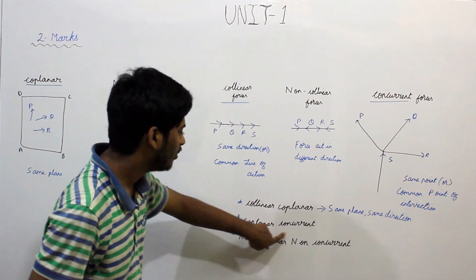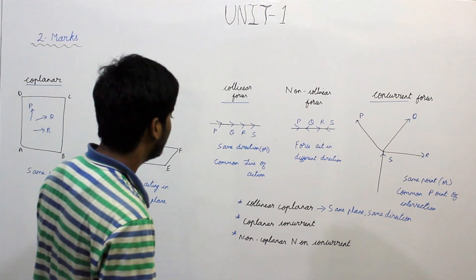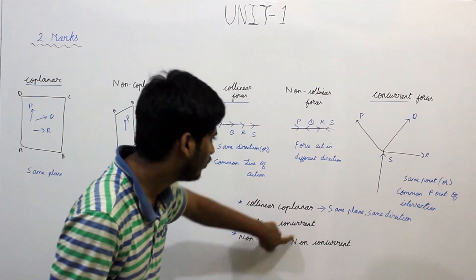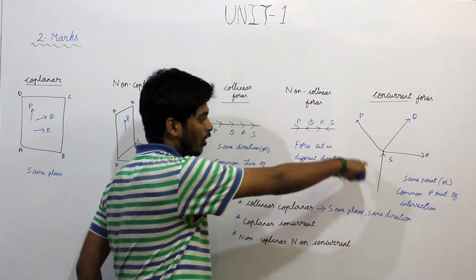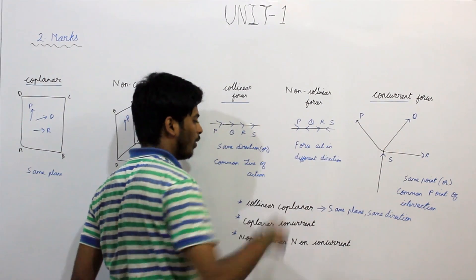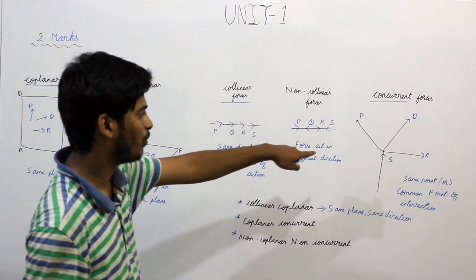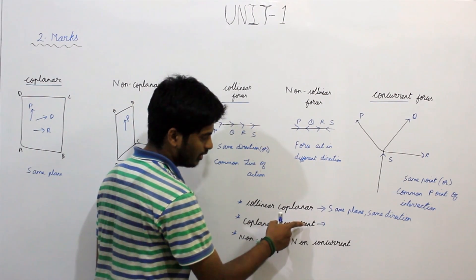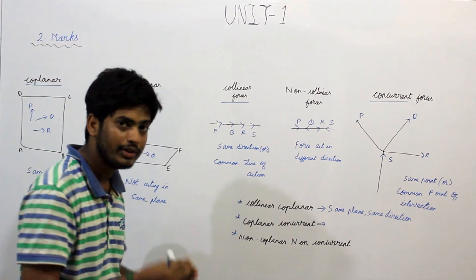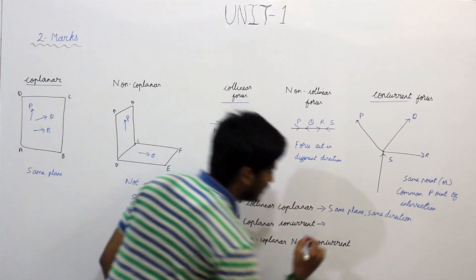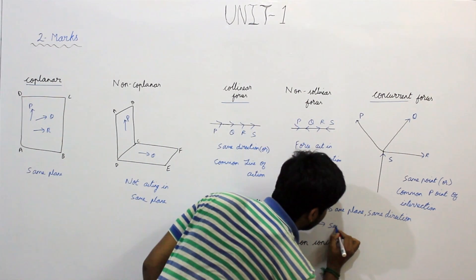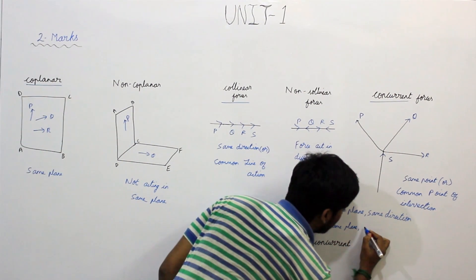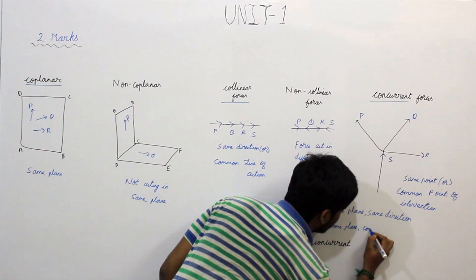Next is coplanar concurrent forces. Coplanar forces are those which have the same plane. Concurrent forces are all forces which have a common point of intersection. So coplanar concurrent forces are those which lie in the same plane and also have a common point of intersection.